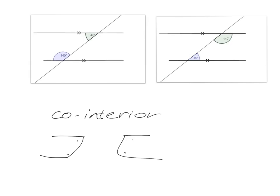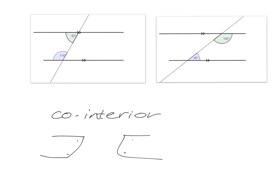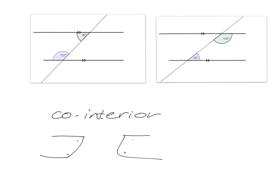What happens with co-interior is different. Have a look at how this works. Observe this video on the left and see what happens with your co-interiors. They don't stay the same size. As this blue angle gets bigger, so the green one gets smaller. We're going to make the blue one get smaller and smaller, and you can see that as the transversal pushes to make this smaller, it's going to allow this green one to get bigger.